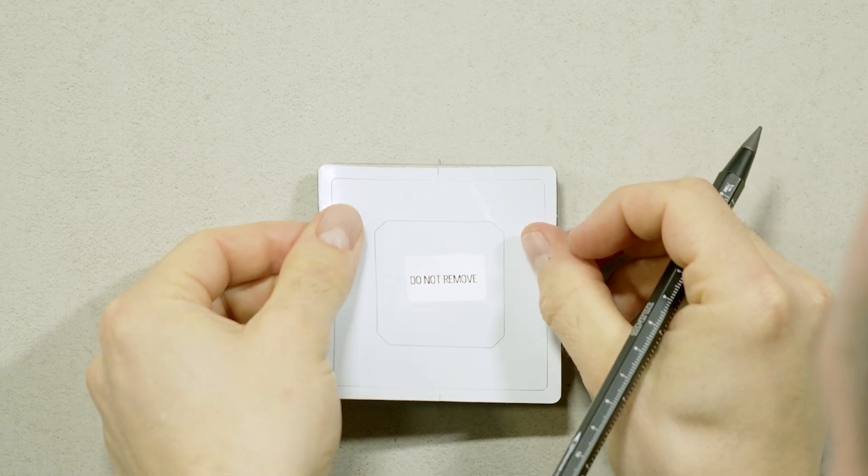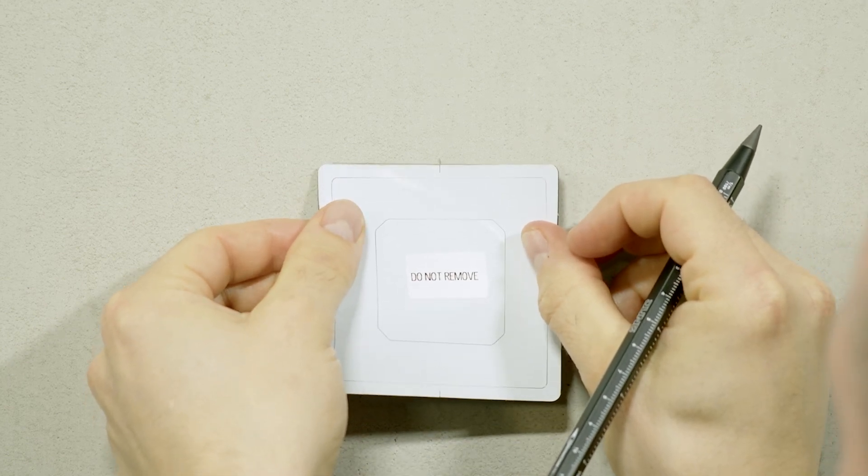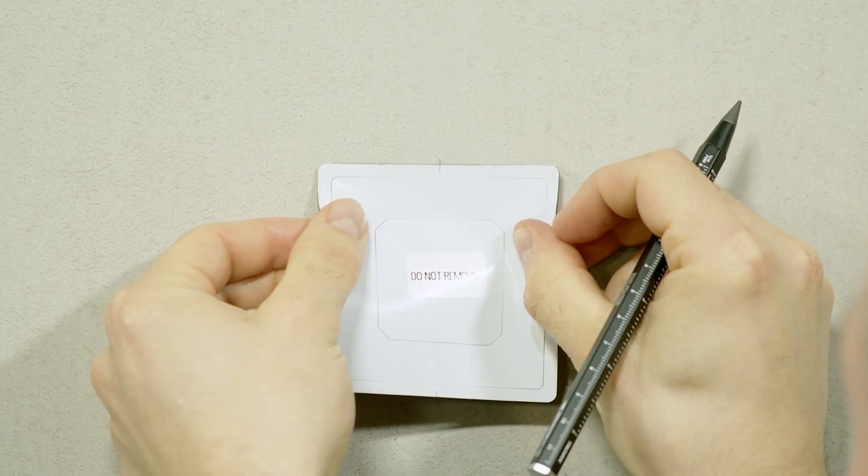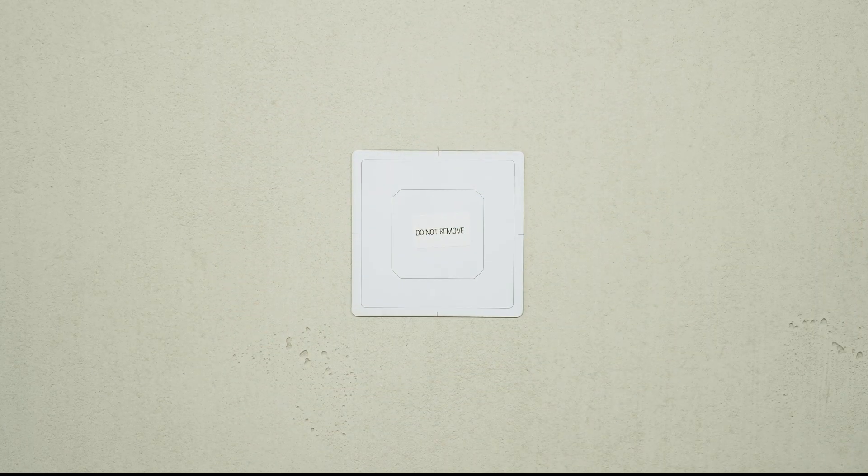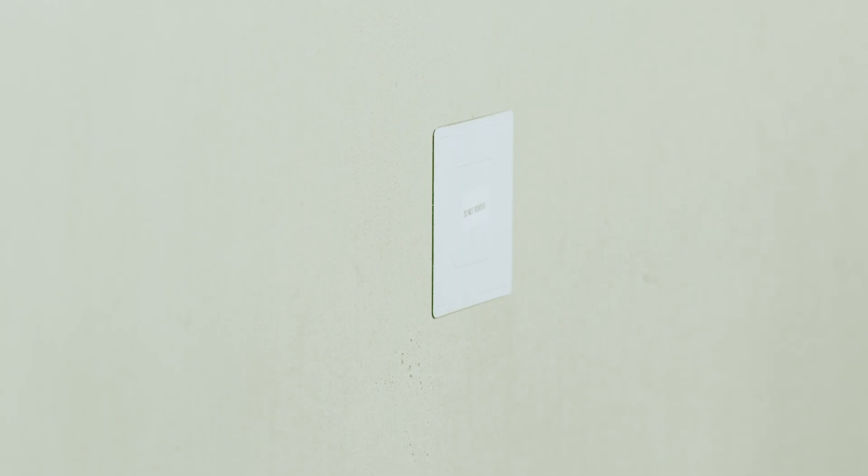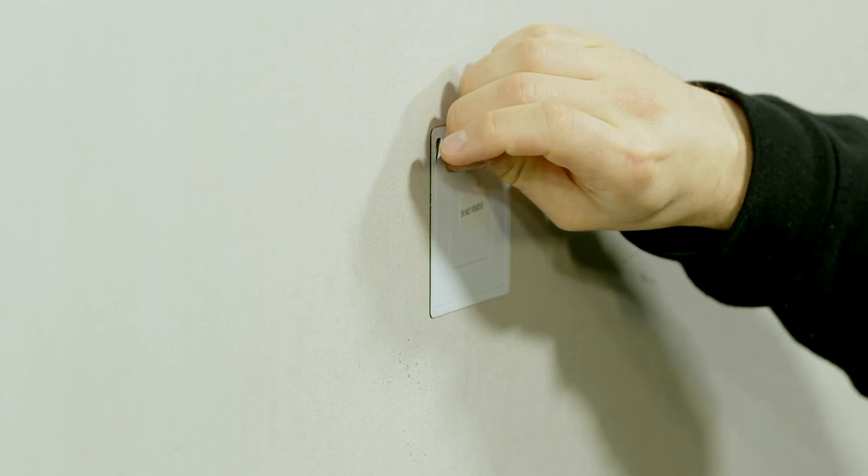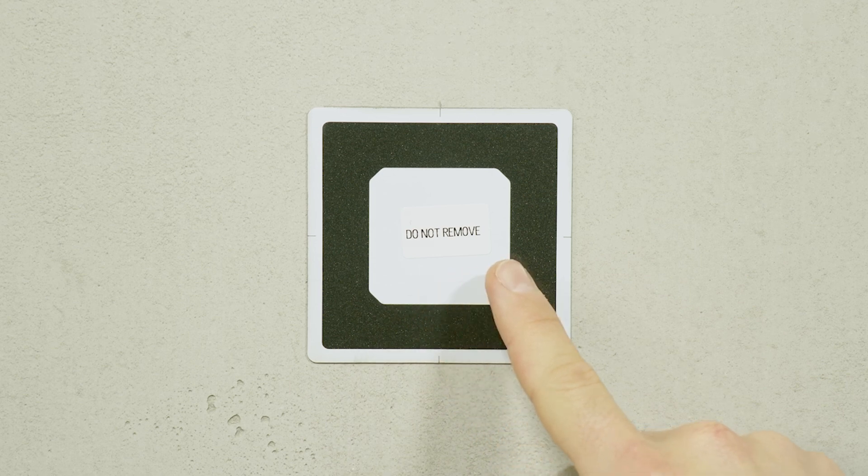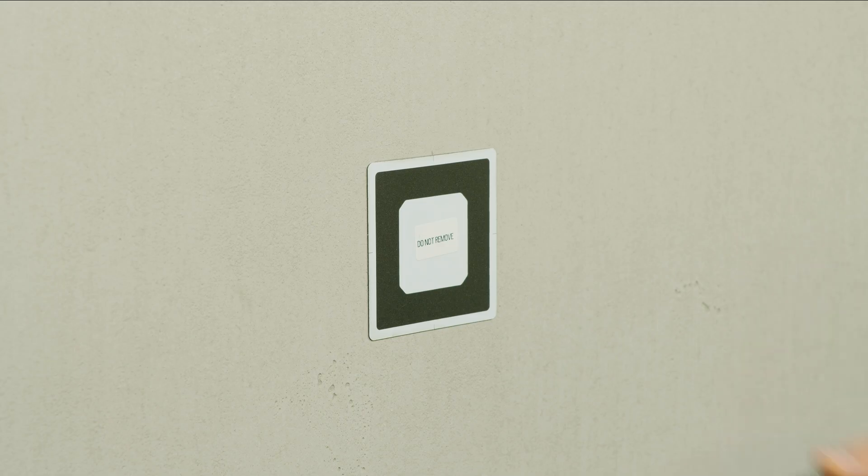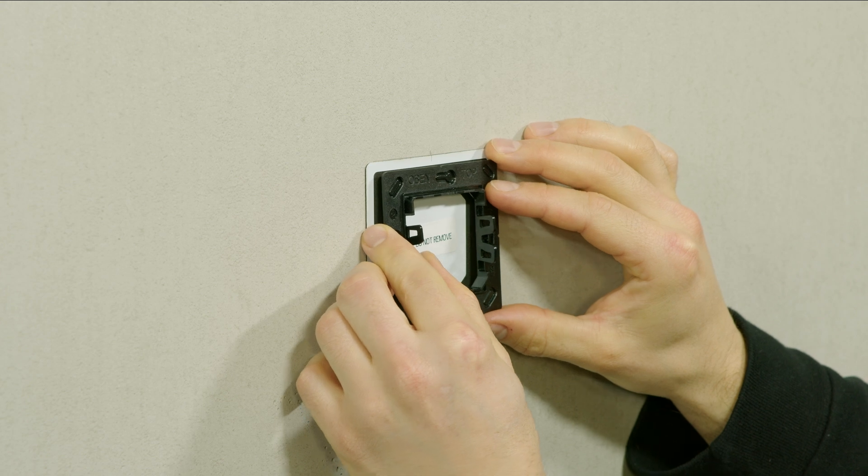When everything is aligned, stick the film in place and remove any air bubbles. Peel off the middle section of the front film. Do not remove the central area of the film as otherwise it will be more difficult to remove, for example when changing the battery.